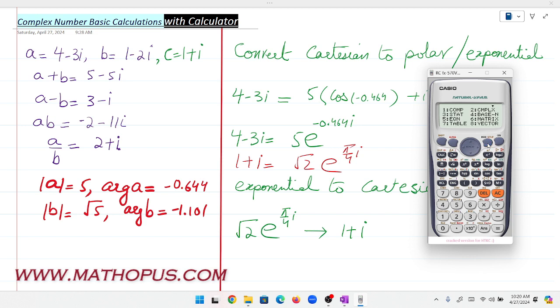First step: press Mode, then select the second option for complex numbers. Now we're in the complex menu.